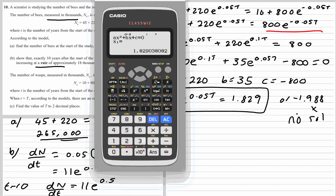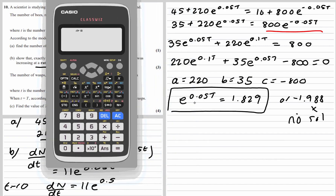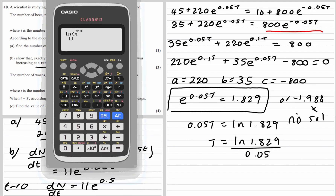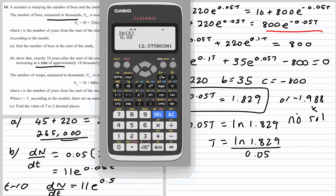We store that answer in memory as A. Then, to solve e^(0.05t) = 1.829, we take the natural log of both sides: 0.05t = ln(1.829). Dividing by 0.05 gives t = ln(1.829) / 0.05. Typing this into the calculator gives T = 12.08 to two decimal places.